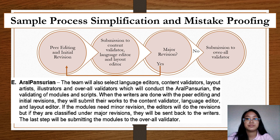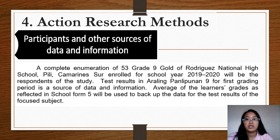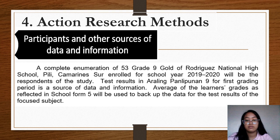For action research methods, we have participants and other sources of data and information. Data on the respondents must be presented here; if there are other sources of data like external stakeholders, they must also be included. For example, a total enumeration of 53 Grade 9 Gold students of Rodriguez National High School, Camarines Sur, enrolled for school year 2019-2020 will be the respondents. Test results in AP for the first grading period and learners' grades as reflected in SF1 will also be used as sources of data and information.